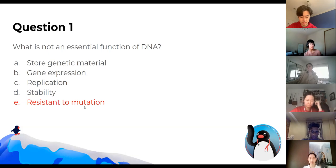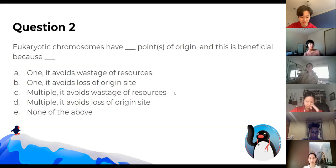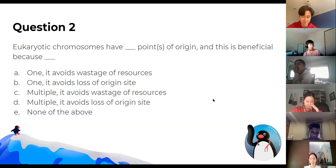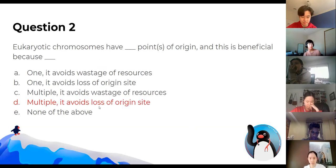This is like the first lecture of the year. Eukaryotic chromosomes have multiple points of origin, and this is beneficial because it's a bit protective — if you lose one, you can still replicate your DNA.